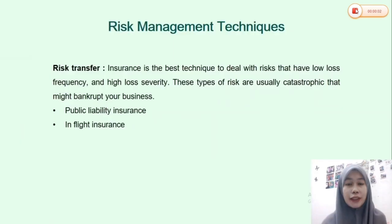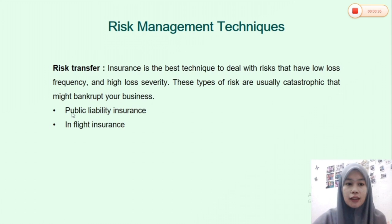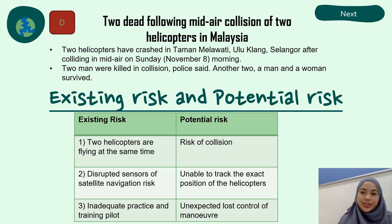In my opinion, the best risk management technique for mechanical failure is risk transfer — specifically, taking out insurance. Insurance is the best technique to deal with risk that has low loss frequency and high loss severity. Mechanical failure impacts aircraft losses and also loss of life. These types of risks are usually catastrophic and might bankrupt a business. Examples of insurance you can take include public liability insurance and hull insurance.